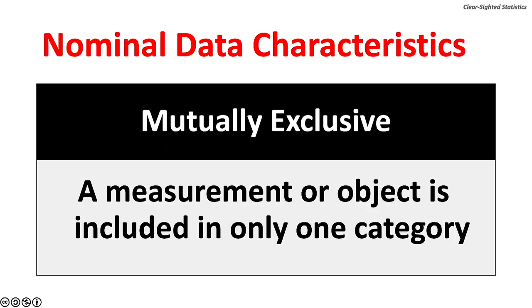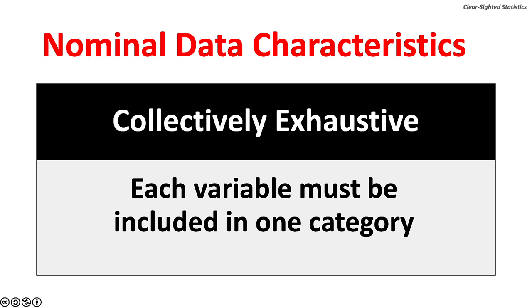There are two important characteristics of nominal data. One, nominal data are mutually exclusive — a measurement or object is included in only one category. And two, nominal data is collectively exhaustive, meaning that each variable must be included in one category.